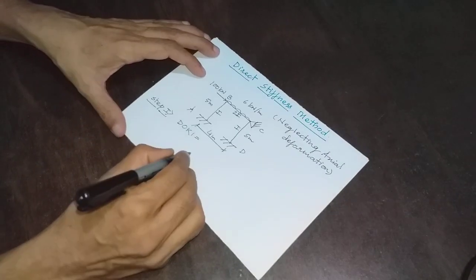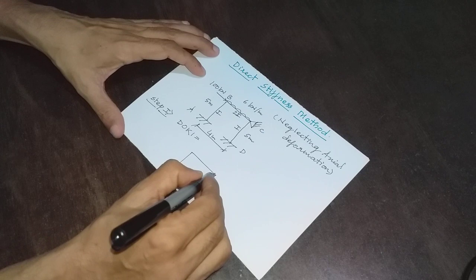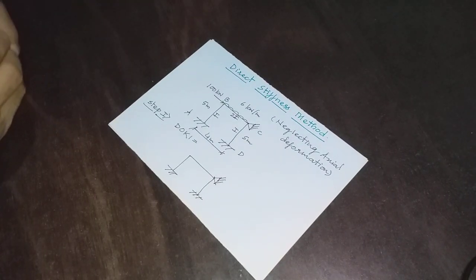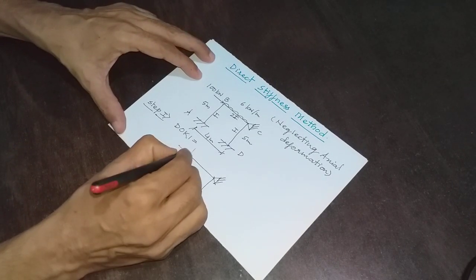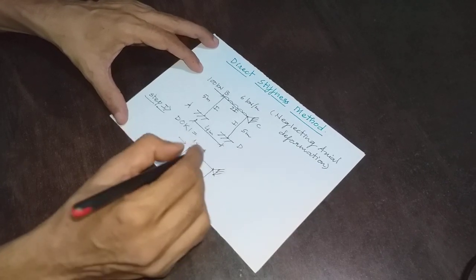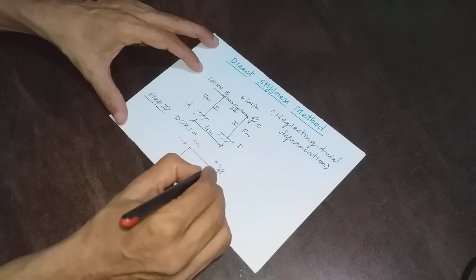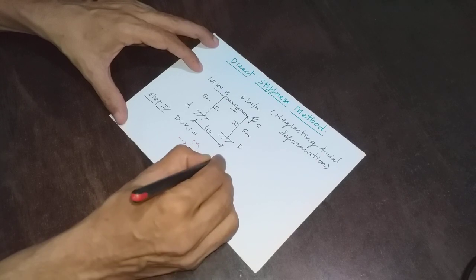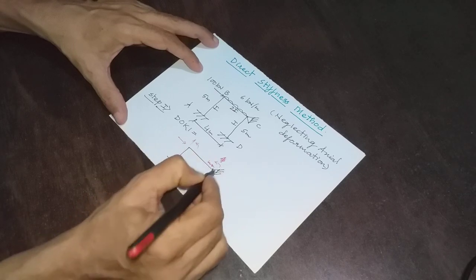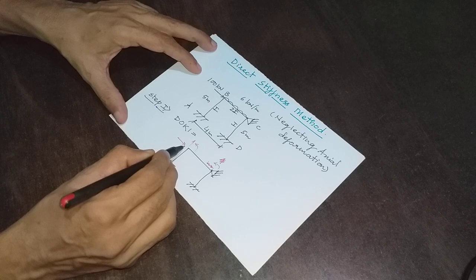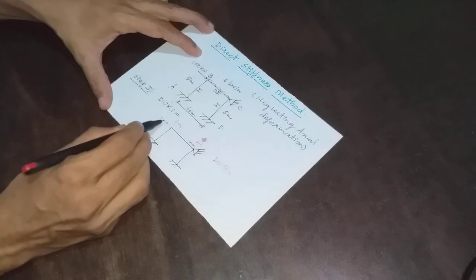What is the degree of kinematic indeterminacy? At joint B, there are 3 degrees of freedom, and at joint C, there are also 3 degrees of freedom, since these two are free joints. However, C is hinged, so only rotation is possible there — that is 1 degree of freedom. So the total degree of freedom is 3 plus 1 equals 4.